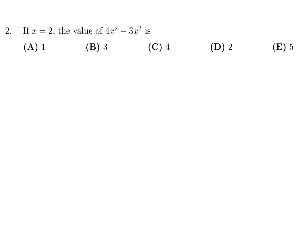If x is 2, the value of 4x squared minus 3x squared, well that is just x squared. If x is 2, plug it in, that would be 2 squared, and 2 squared is 4. So the answer here is C.